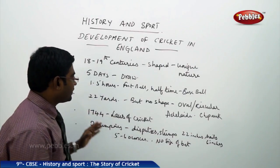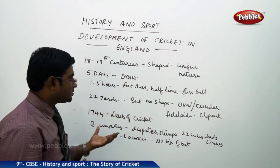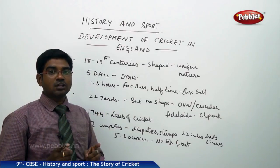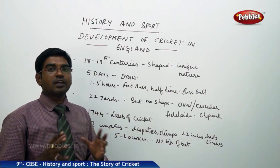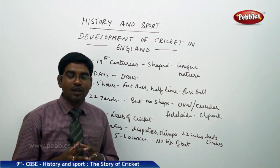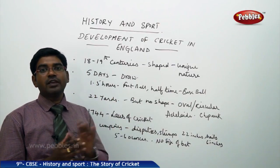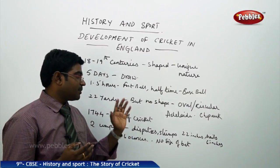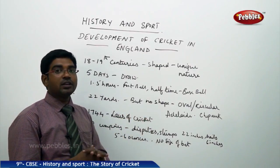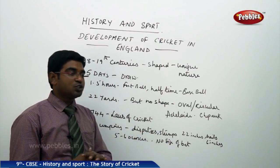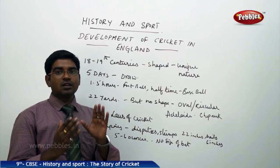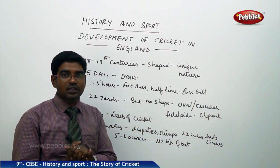Moving on, the rules state that 22 yards is a strict pitch length, but the shape of the ground is not fixed. There is no fixed shape for the ground — it is sometimes oval or sometimes nearly circular. For example, the Adelaide Oval ground in Australia and the Chepauk Stadium in Chennai, where the shapes are oval or closely circular.